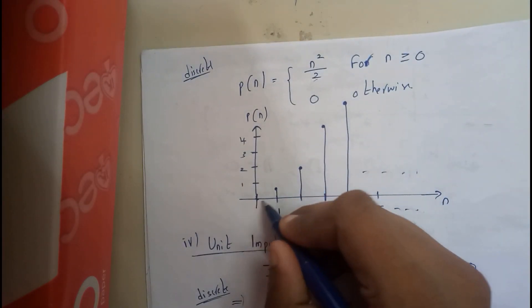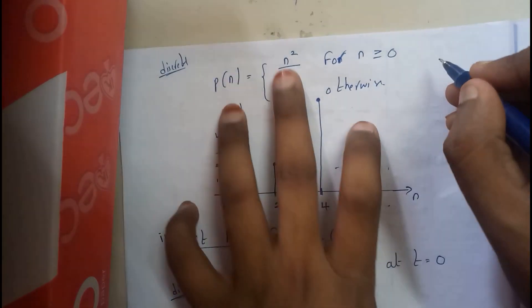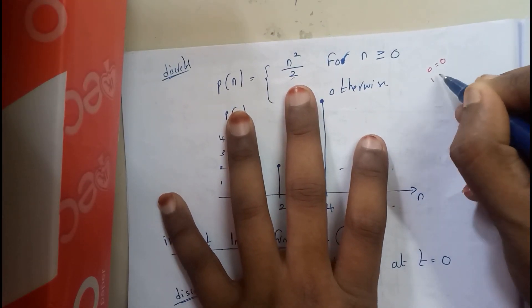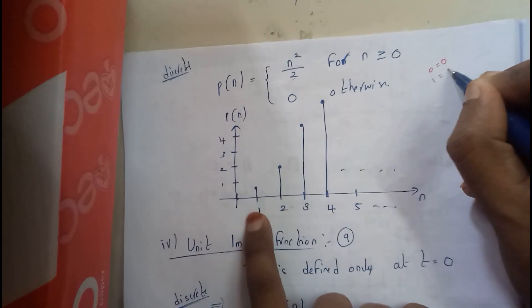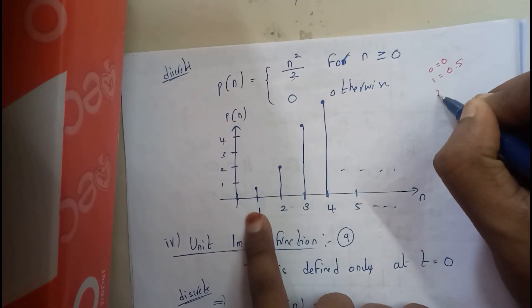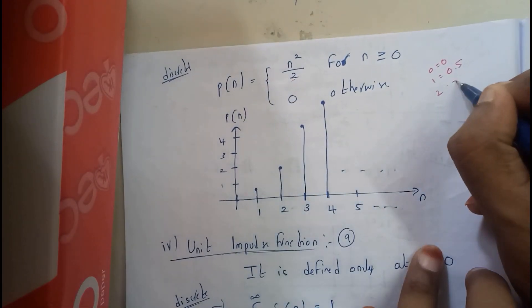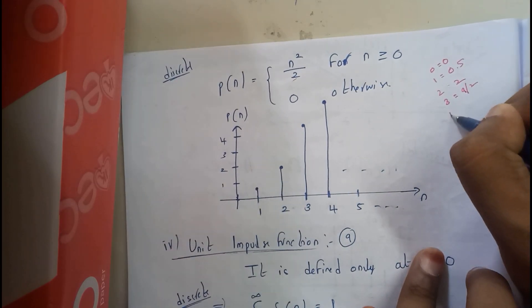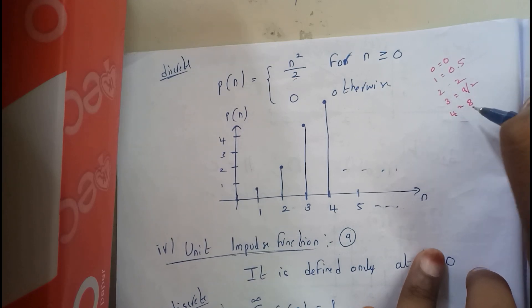It keeps on increasing slowly. If we substitute the value at 0, it is equal to 0. At 1, it equals 0.5. At 2, it equals 2. At 3, it equals 9 by 2, that is nothing but 4.5. At 4, it equals 8.